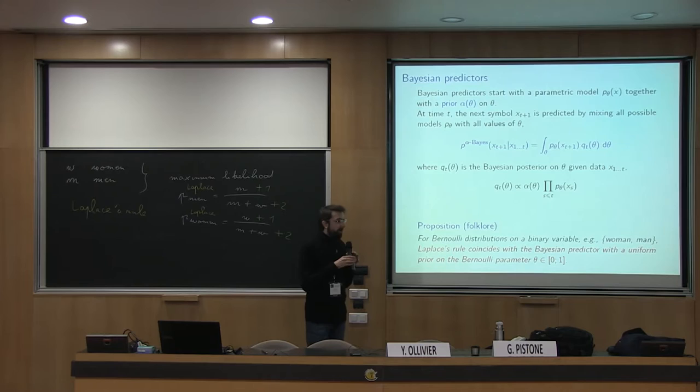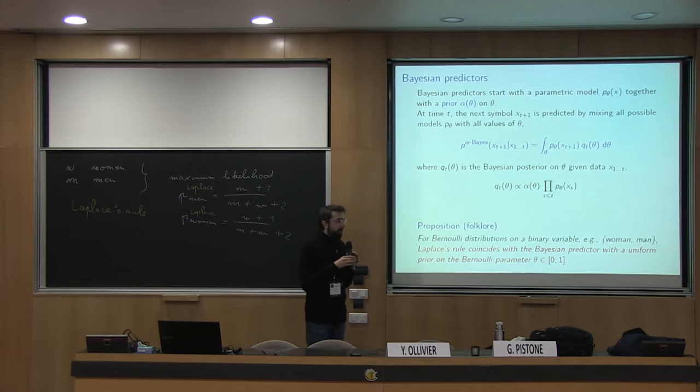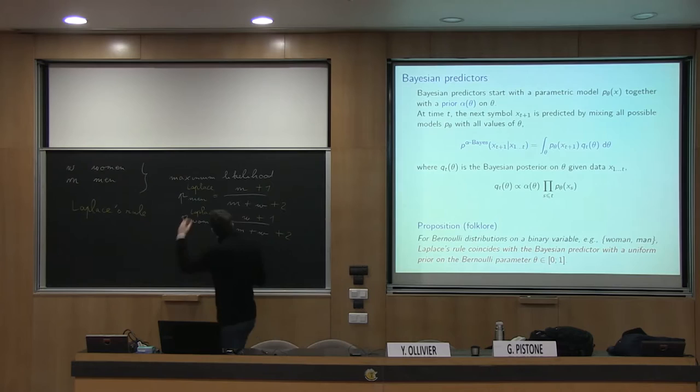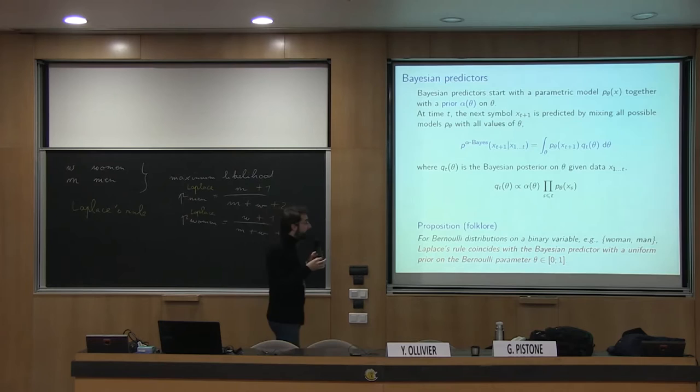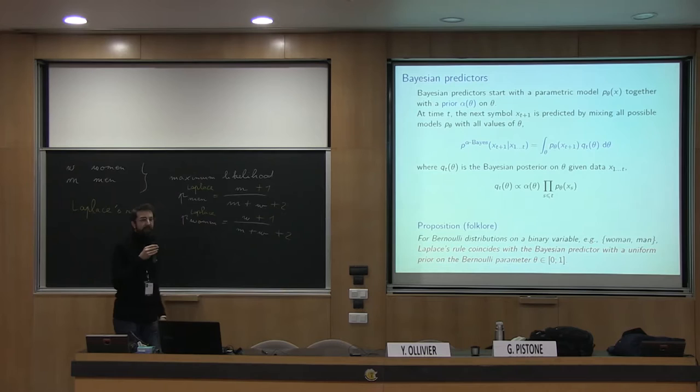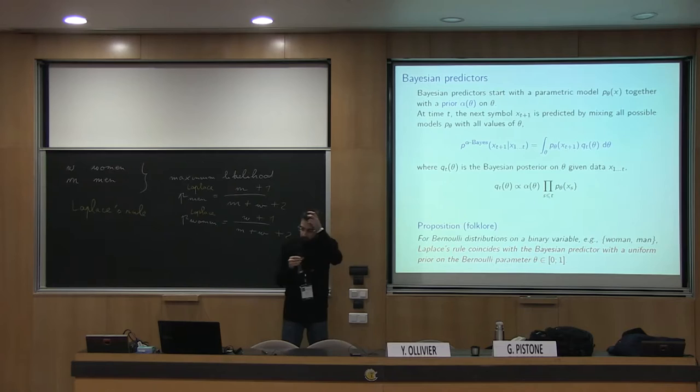What I want to emphasize is that in this formalism you can recover Laplace's rule. If you start with a Bernoulli model — probability theta to see a woman and one minus theta to see a man — and you put a Bayesian prior which is uniform on theta in [0,1], then the Bayesian predictor coincides exactly with Laplace's rule. That is well known.